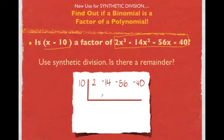To start, I bring down my 2, multiply. 10 times 2 is 20. Add, I get 6. Add, I get 4. Multiply, 40. Remainder 0. It is a factor.